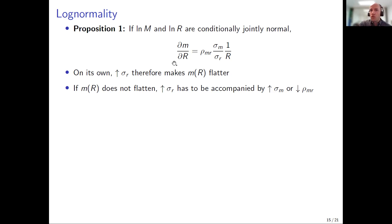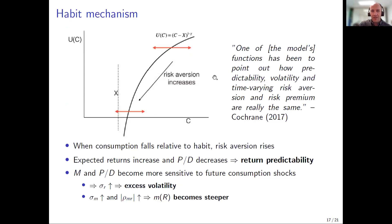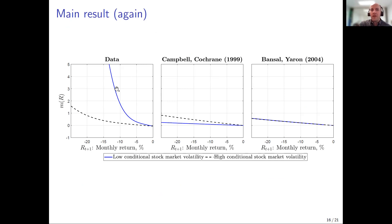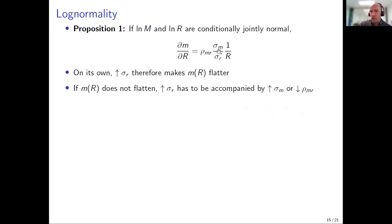The key implication: when return volatility goes up (high VIX), dividing by a large number makes the slope flatter. The slope is negative because an equity premium requires a negative correlation. So as I divide by a larger number, the slope becomes less negative — flatter. This says the pricing kernel should become flatter as volatility increases. That's exactly what we see in the data. Why doesn't it become flatter in the models? Something else must change: the volatility of the pricing kernel itself, or its correlation with returns.